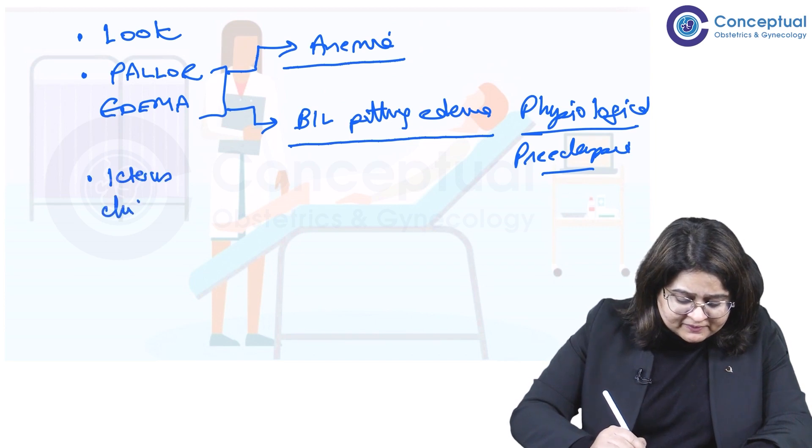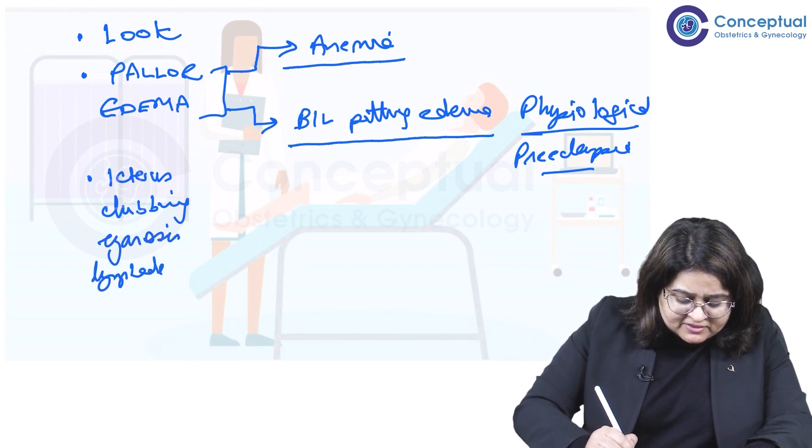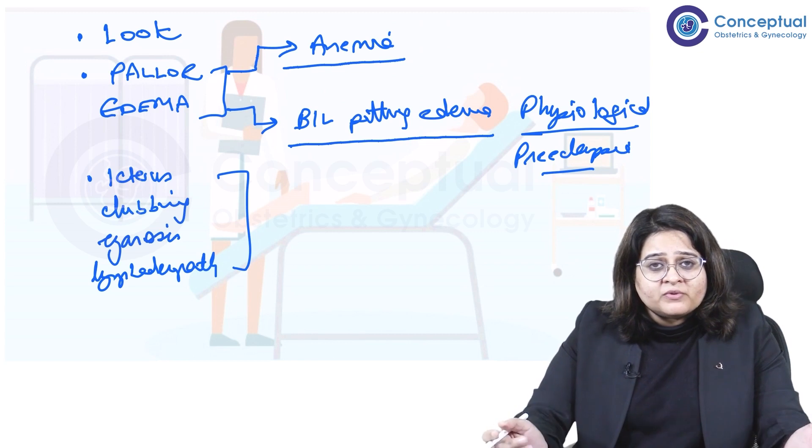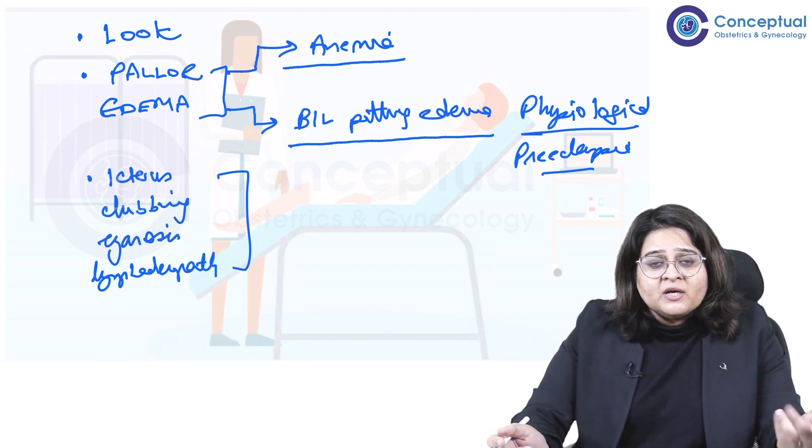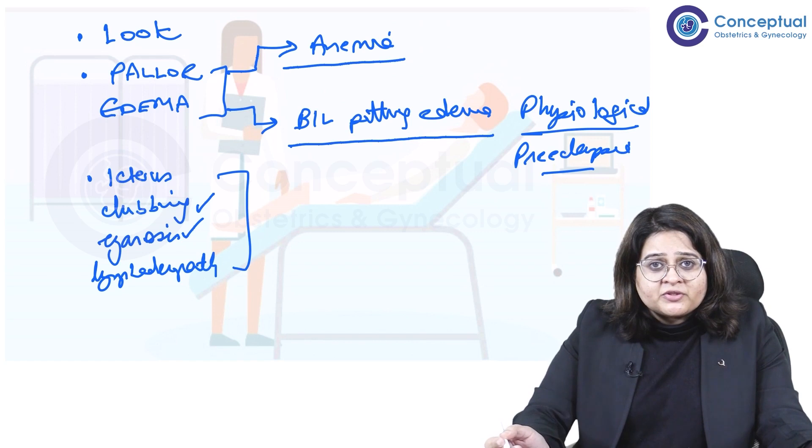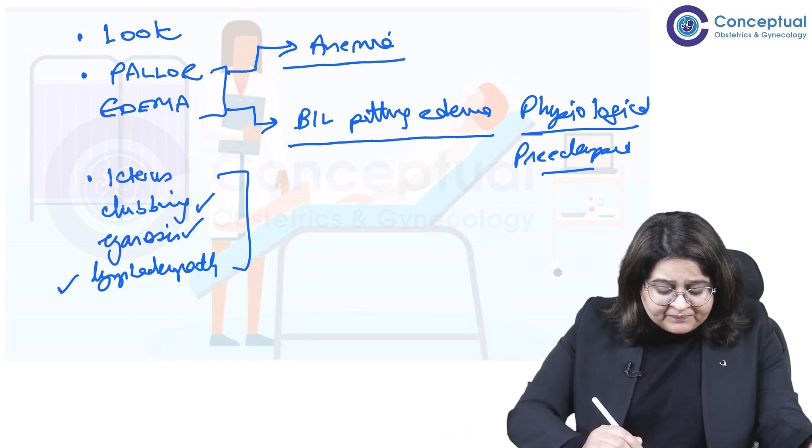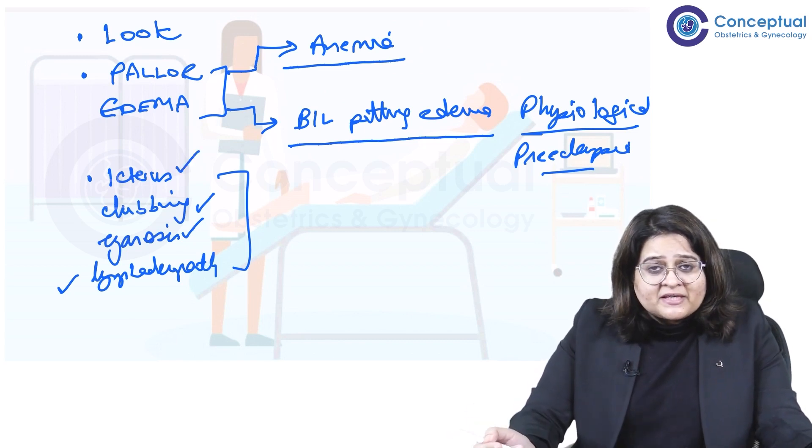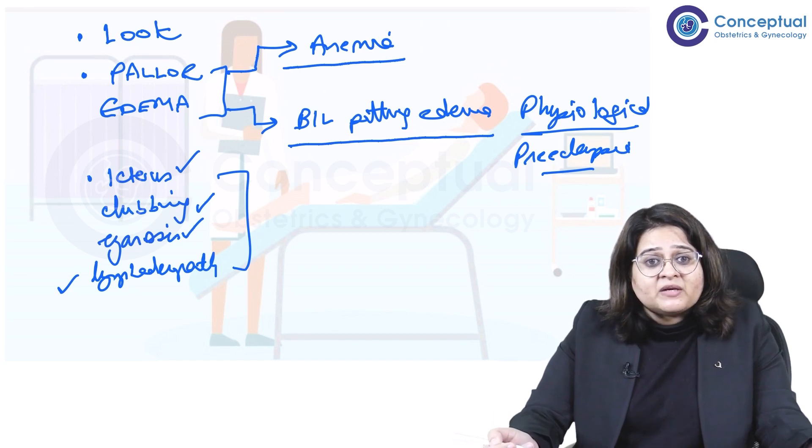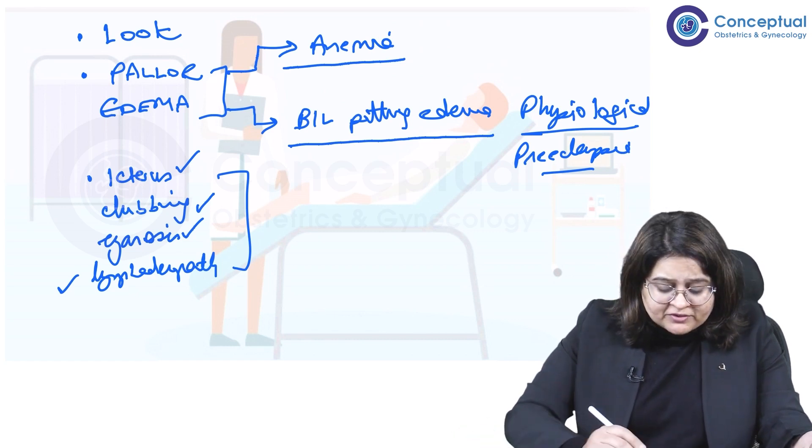The remaining part of PICKLE: icterus, clubbing, cyanosis, lymphadenopathy. These are the remaining parts. These are important depending on the case. So even if you miss icterus or clubbing in a normal pregnancy case, say a previous C-section is there and you're examining. But if you're examining a patient with heart disease, clubbing and cyanosis become important. If you're examining a patient with known pulmonary tuberculosis or known tuberculosis, lymphadenopathy becomes important, or maybe a known malignancy who's come with pregnancy. If she's a case of liver disorder in pregnancy, AFLP or IHCP, hepatic cholestasis or viral hepatitis, then again icterus becomes important. Or even maybe preeclampsia, HELP syndrome may have mild jaundice. So icterus becomes important there.